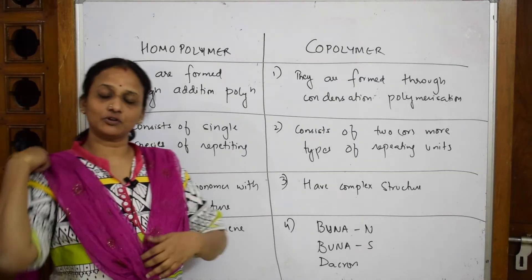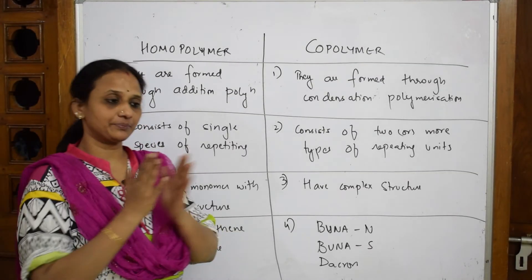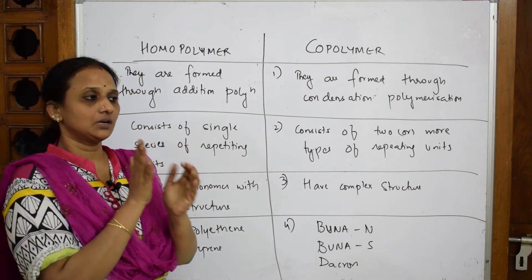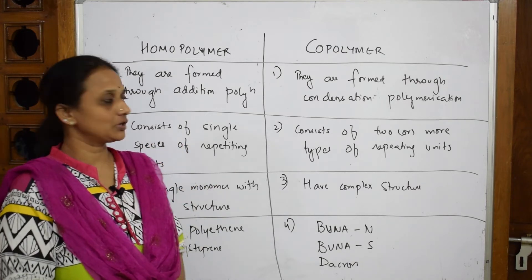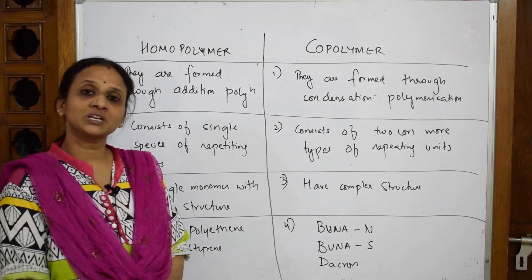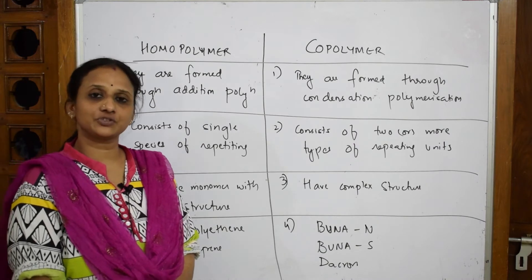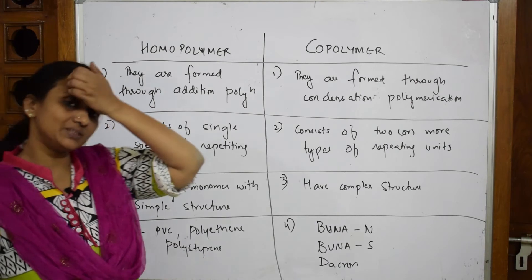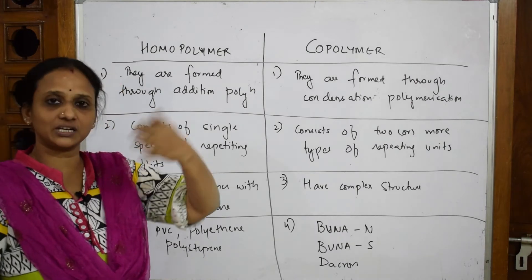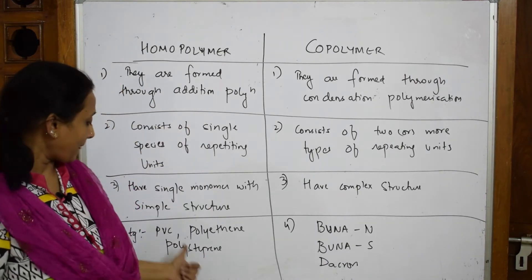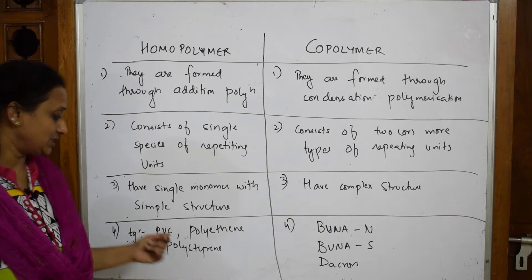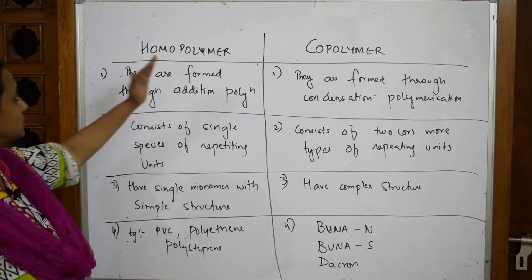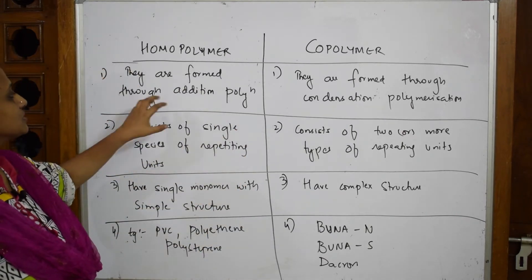We are done with the chapter. This is a summary — they ask you what is the difference between homopolymer and copolymer. I've listed out a few for you so it's easy to remember. It's a combination of all the topics together. As we know, 'homo' means similar. We've already done many examples for homopolymers, like PVC, polyethene, and polystyrene.